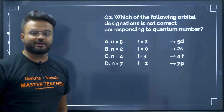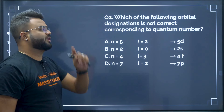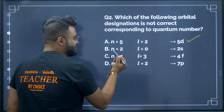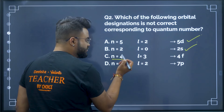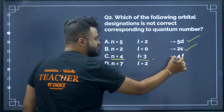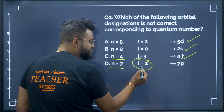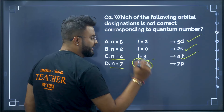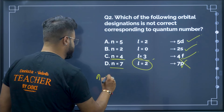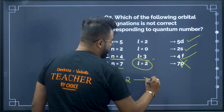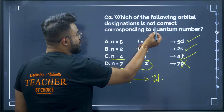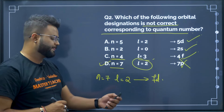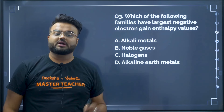Question 2: Which of the following orbital designations is not correct corresponding to the quantum number? n=5, l=2 → 5d, correct. n=2, l=0 → 2s, correct. n=4, l=3 → 4f, correct. But n=7, l=2 shown as '4p' is wrong — when n=7 and l=2, it should be 7d. Therefore option D is not correct, and option D is your correct answer.